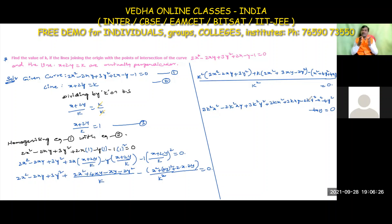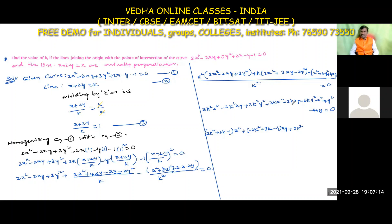Collecting like terms: x² coefficient is (2k² + 2k - 1), xy coefficient is (-2k² + 3k - 4), and y² coefficient is (3k² - 2k - 4). So the equation becomes (2k² + 2k - 1)x² + (-2k² + 3k - 4)xy + (3k² - 2k - 4)y² = 0.